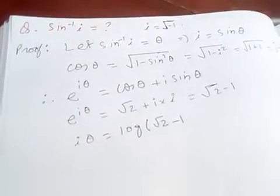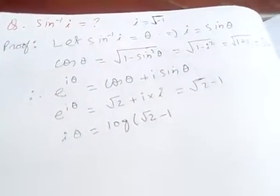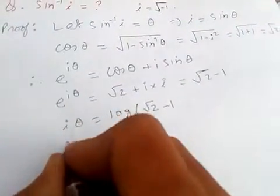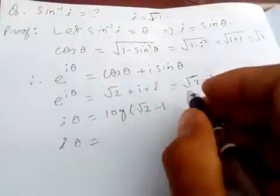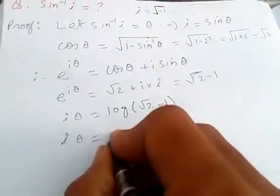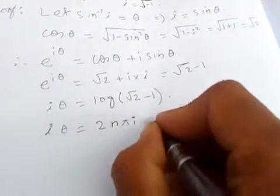And we need to simplify more. We know that log has a periodic function, so we add 2nπ by i.